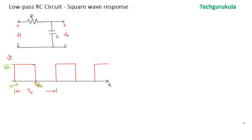We know that a capacitor cannot allow instantaneous changes in the voltage across it. The current flowing through a capacitor is given by i = C·dVc/dt. If Vc has to change instantaneously — like a step — then the amount of current that would need to flow to accommodate that would be infinite. Hence, a voltage across a capacitor cannot change instantaneously. Assuming the capacitor holds no charge initially, the voltage across the capacitor will be 0 even though the input has changed, so it will start with 0.